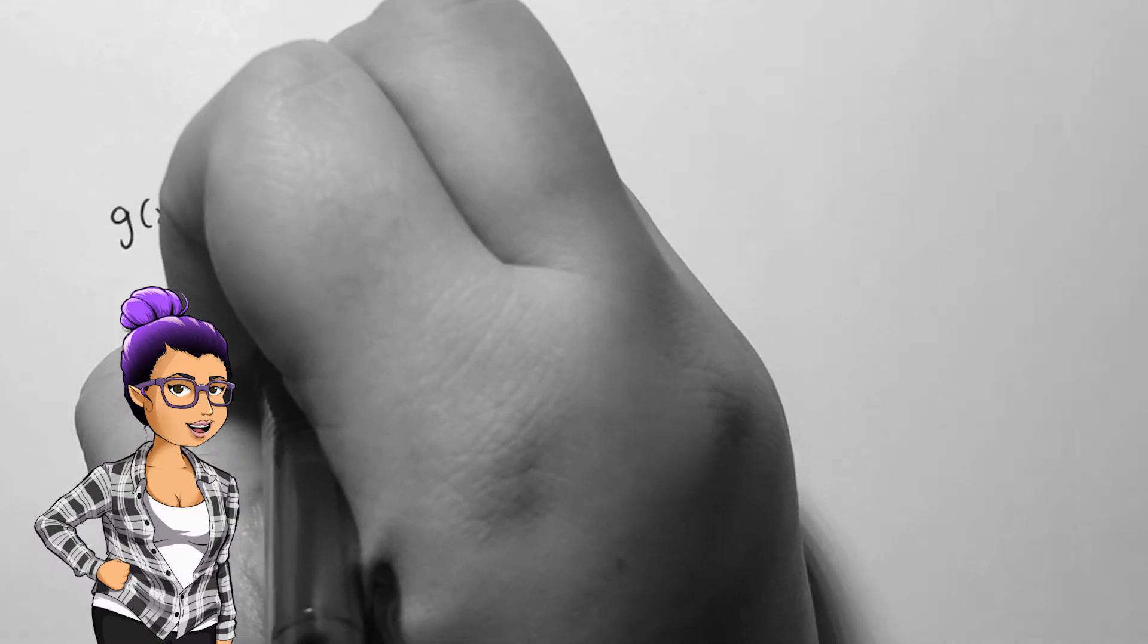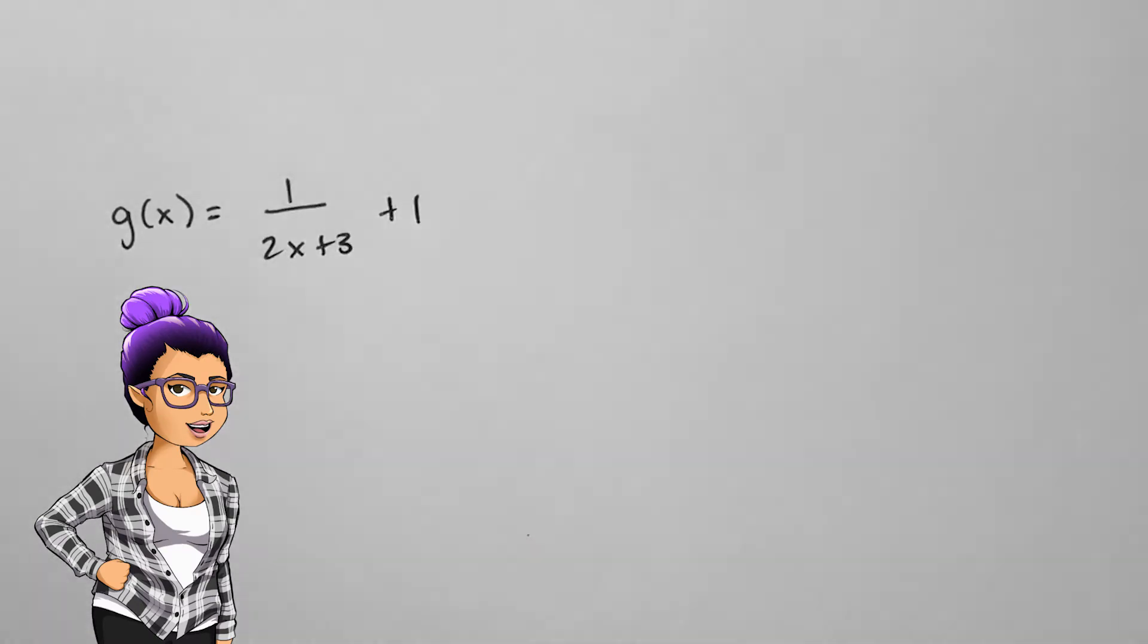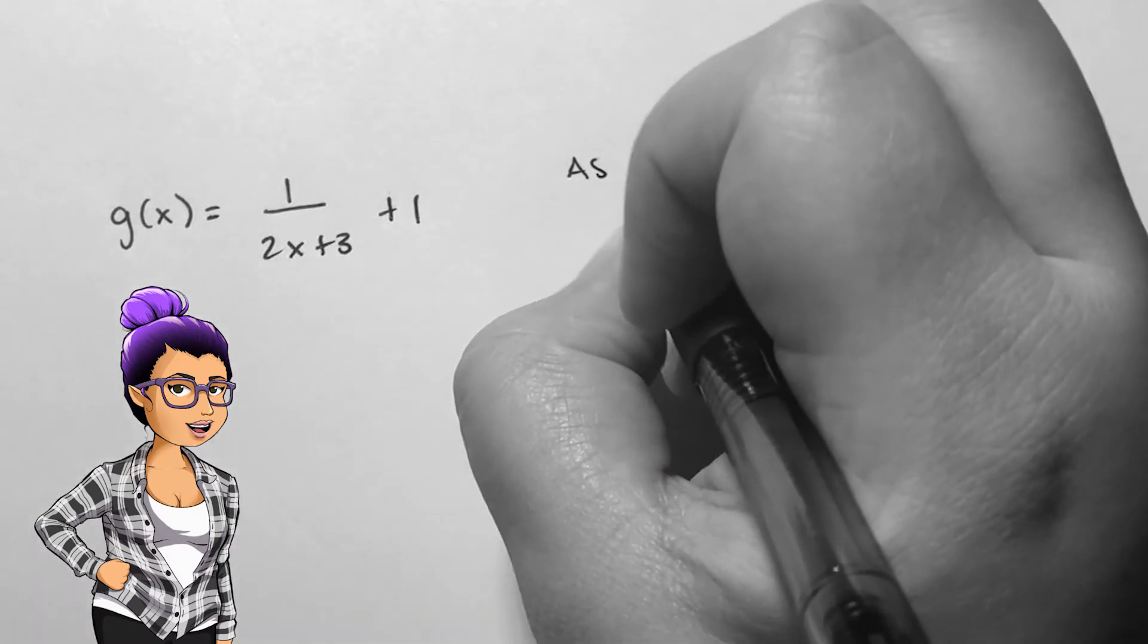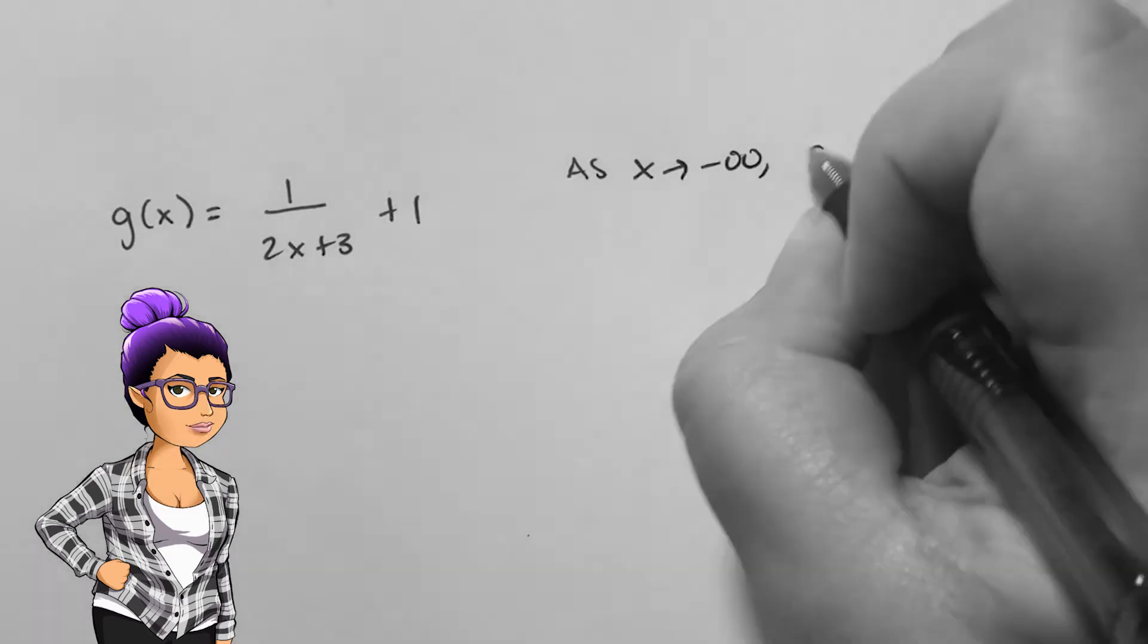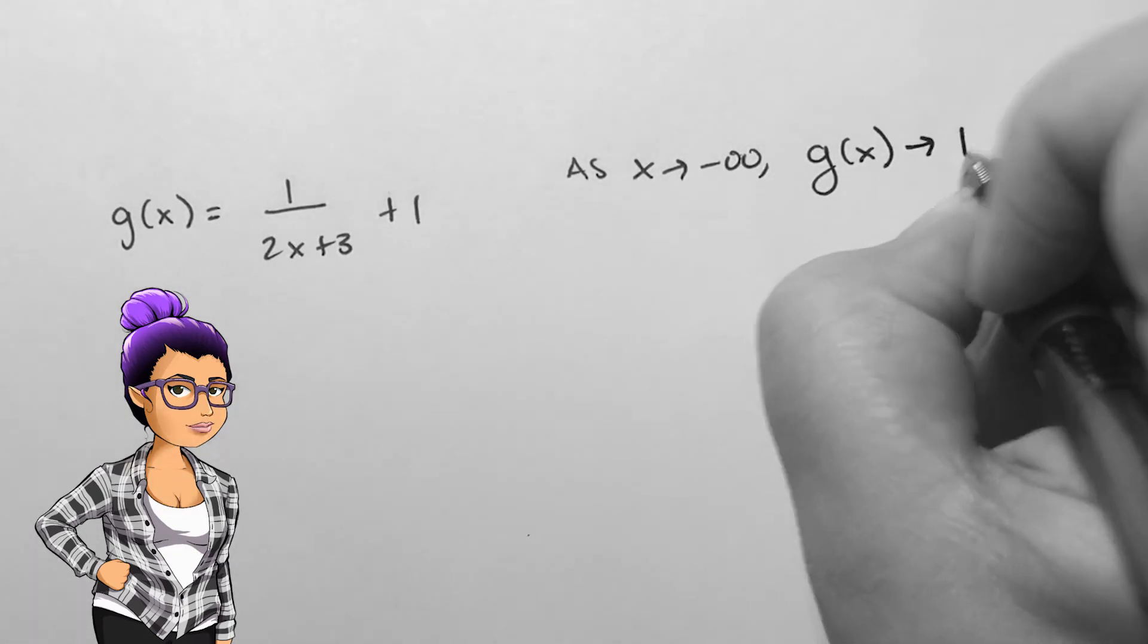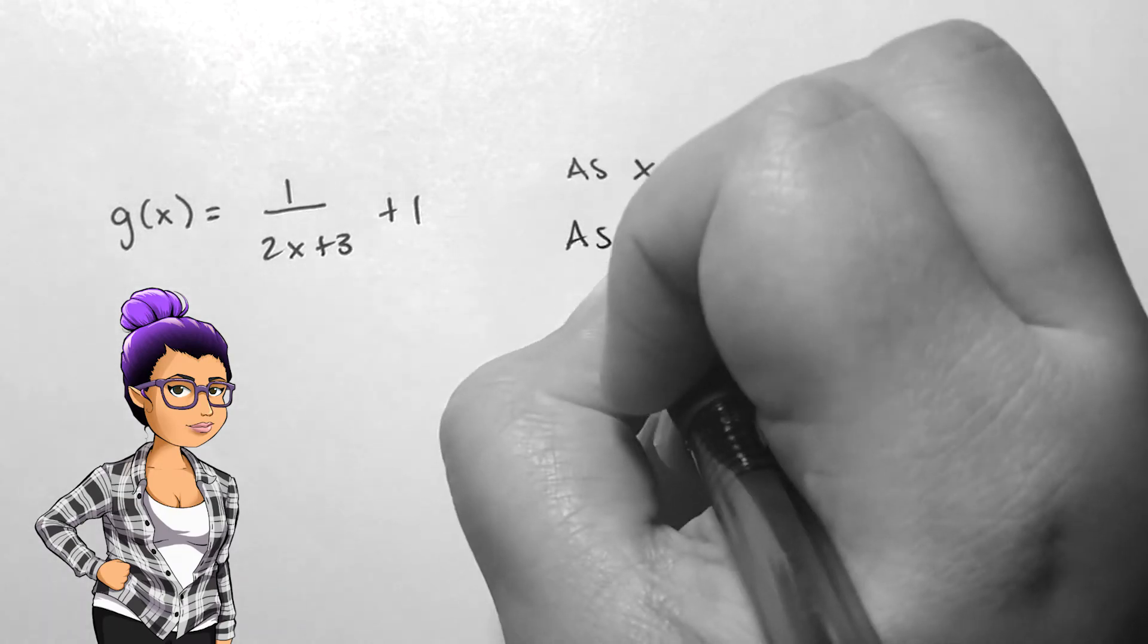If we shift a function up or down, the ends of our arrow notation change when approaching positive and negative infinity. If we shift the function left or right, the beginning of our arrow notation changes to approach a number besides 0 on either side.